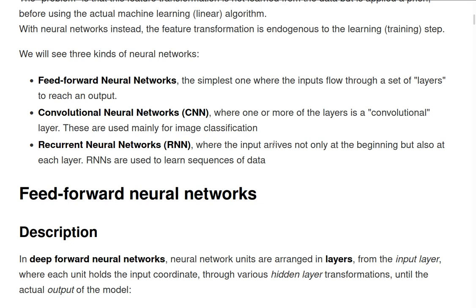Convolutional neural networks have one or more layers represented by a convolutional layer, and these are used mainly for image classification. Finally, recurrent neural networks are different in that the input doesn't come only from the beginning but can arrive at each layer — these are used to learn from sequences of data.